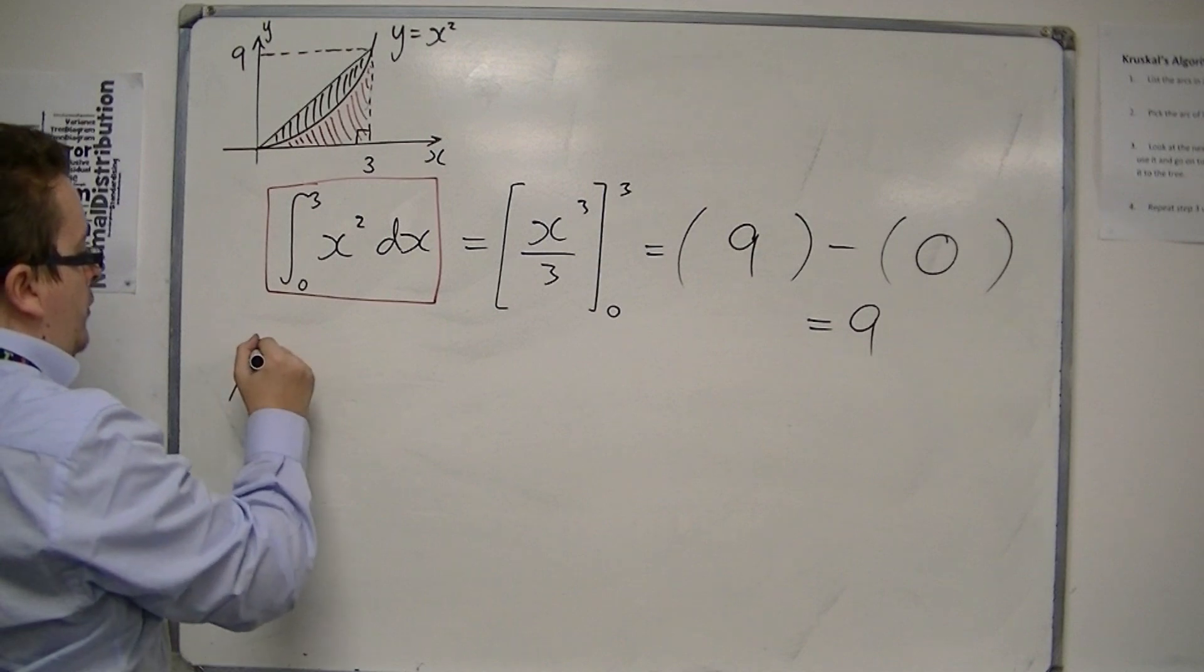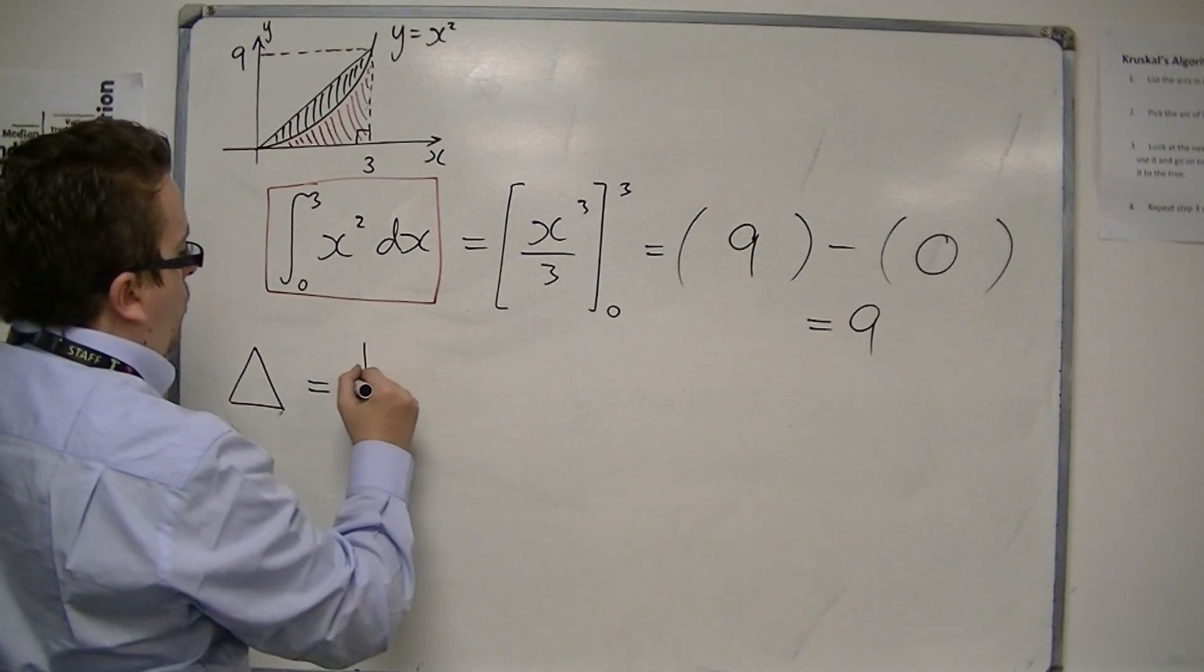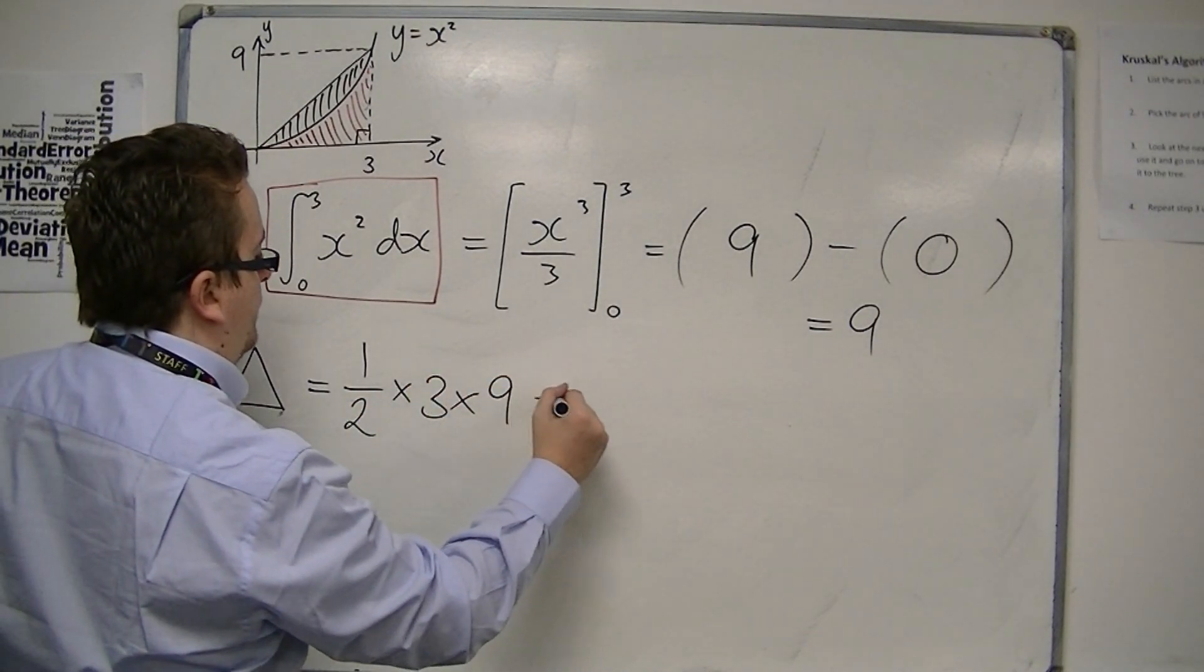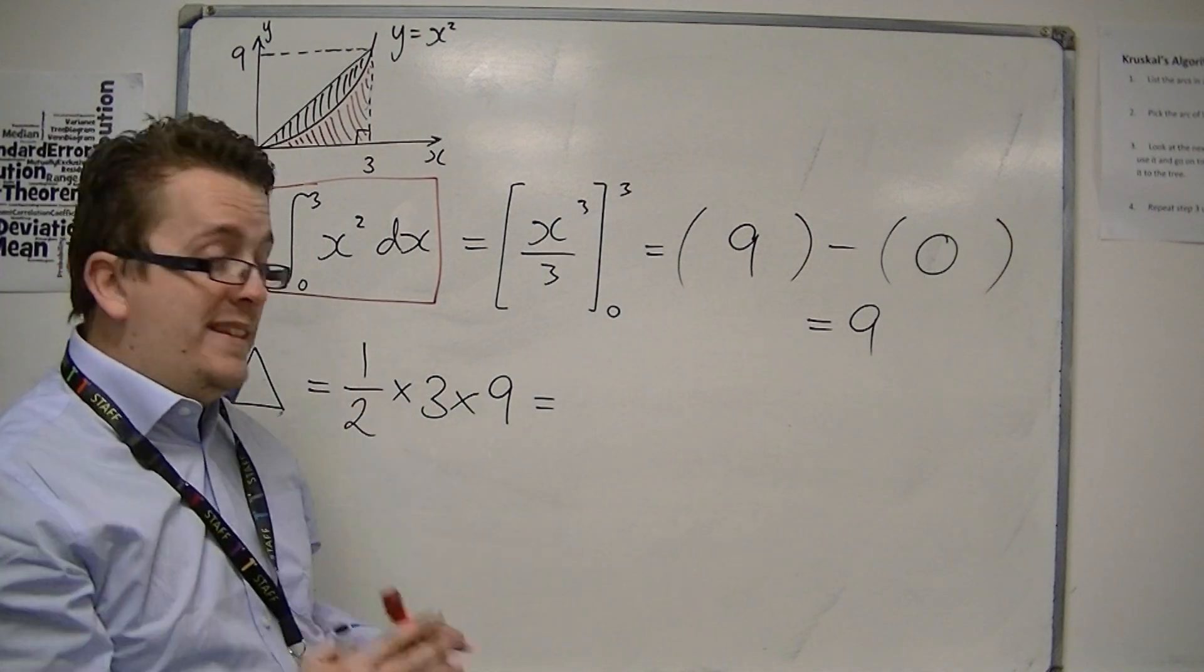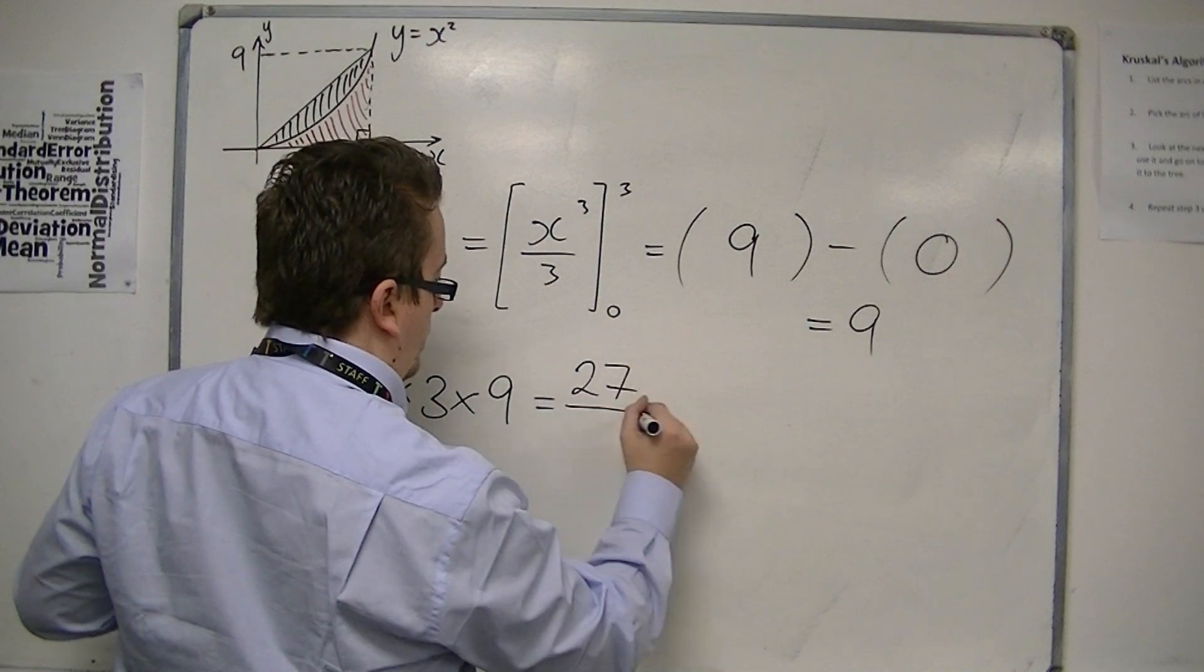So, the area of the triangle is equal to 1 half the base times the height. So, 1 half times 3 times 9. So, we've got 27, half of 27, like that.